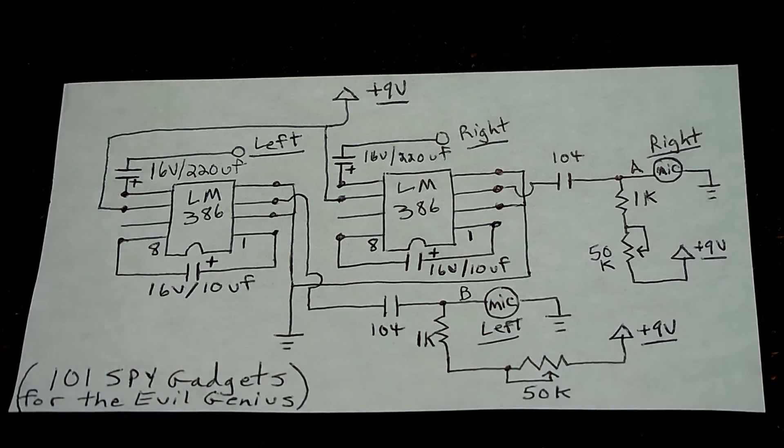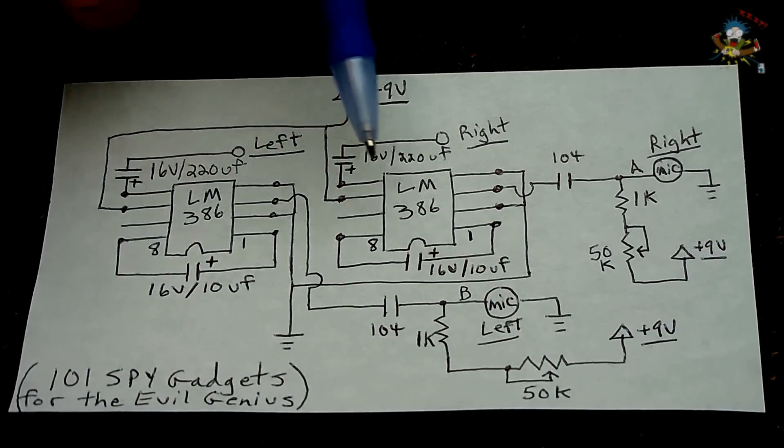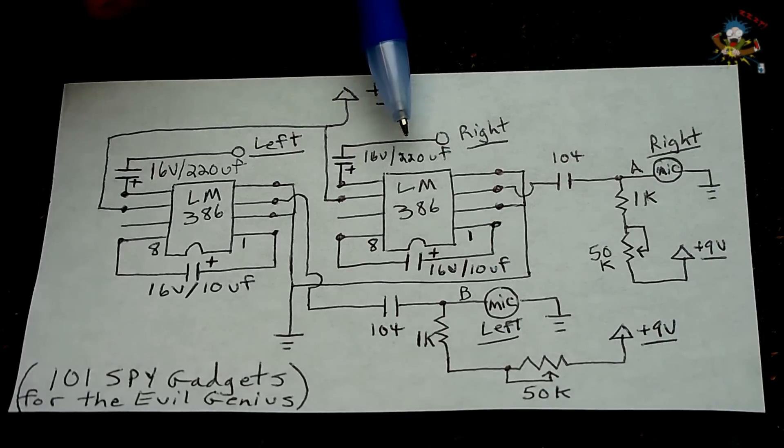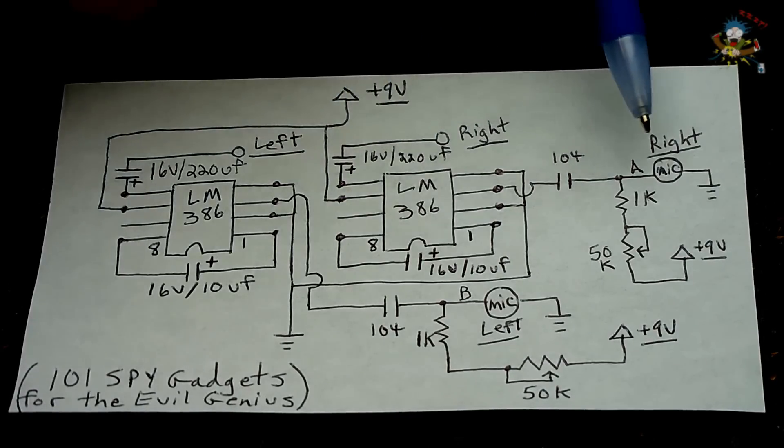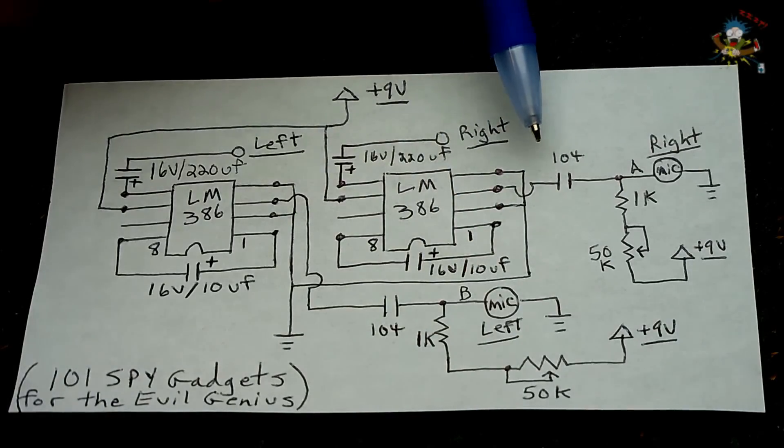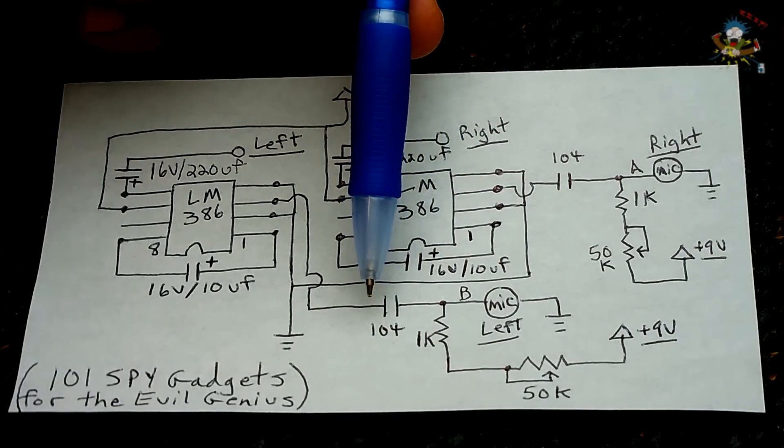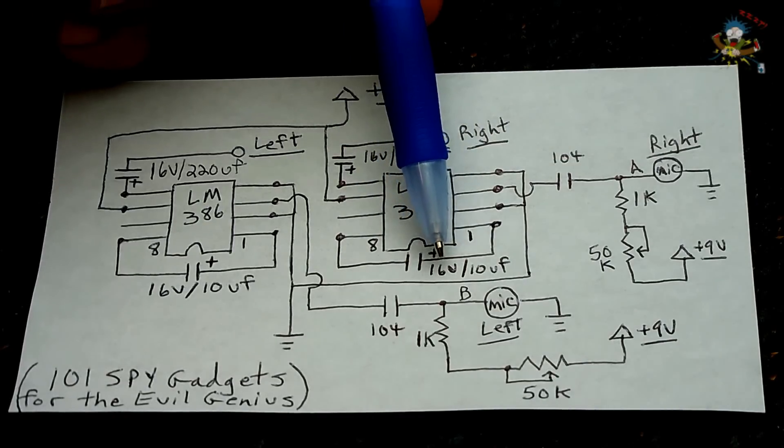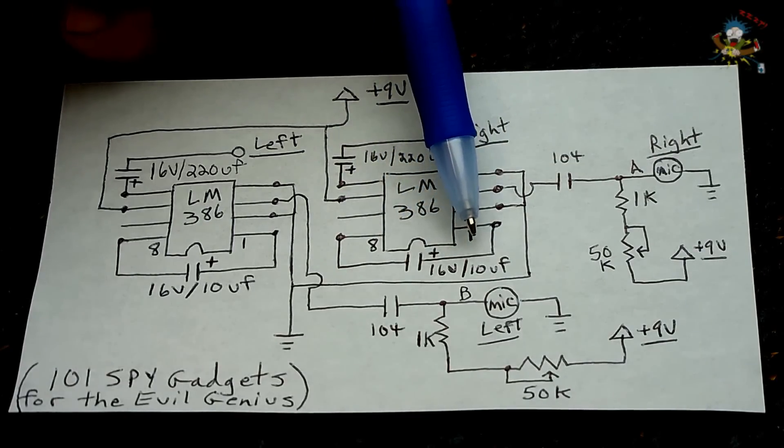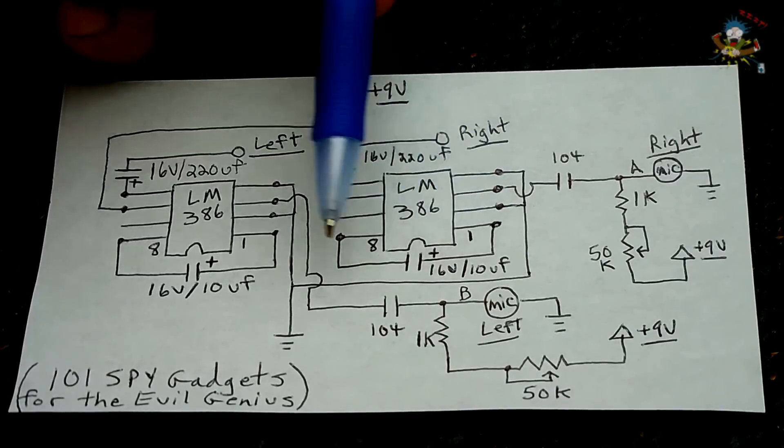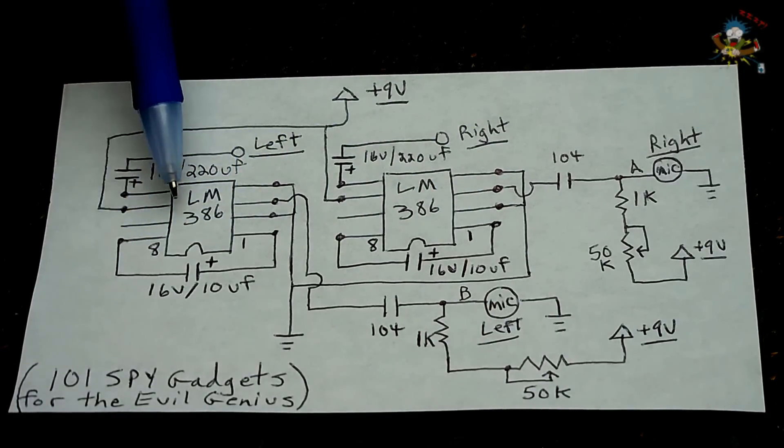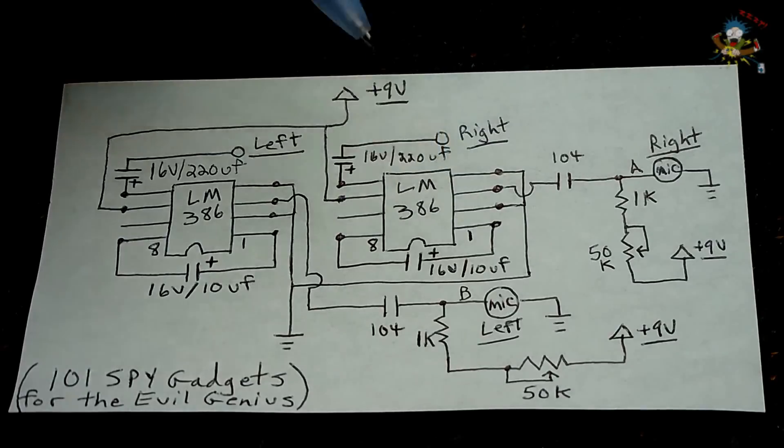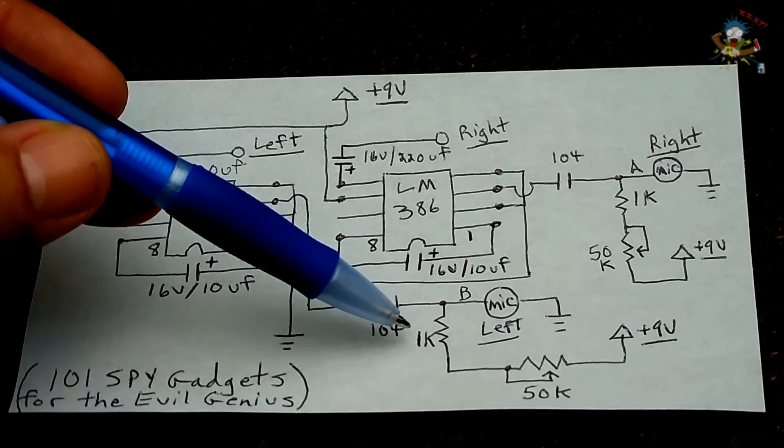For the circuit you're going to require two LM386 audio amplifying ICs, two 16 volt 220 microfarad electrolytic capacitors, two mics, two 104 capacitors, ceramic or mylar are fine. It's 0.1 microfarad each. Two 16 volt 10 microfarad electrolytic capacitors between pin 1 and 8 on both sides. This one controls the left earphone and this one controls the right. 1k resistor quarter watt, one here, one there.